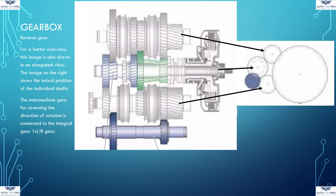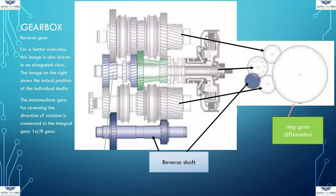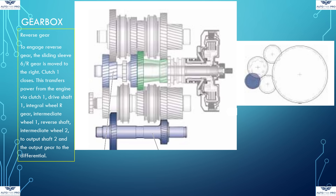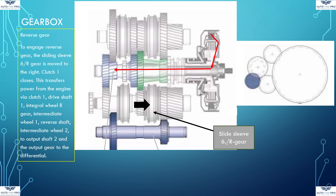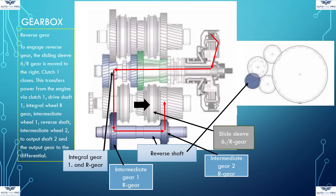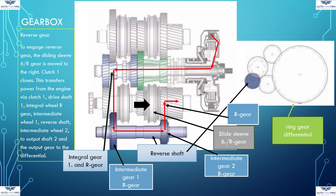For reverse gear, the reverse shaft is now visible. The image on the right shows the actual position of the various shafts and the ring gear of the differential. The intermediate gear for reverse gear is connected to the fixed gear for first gear and reverse gear of driveshaft 1. To engage reverse gear, the sliding sleeve 6 for reverse gear is moved to the right and clutch 1 closes. The power of the engine is transmitted via clutch 1, driveshaft 1, integrated wheel 1, intermediate wheel 1 reverse gear, the reverse shaft, and intermediate wheel 2 reverse gear to the reverse gear engaged via the synchronizer to output shaft 2, and thus to the ring gear of the differential — reverse gear is engaged.